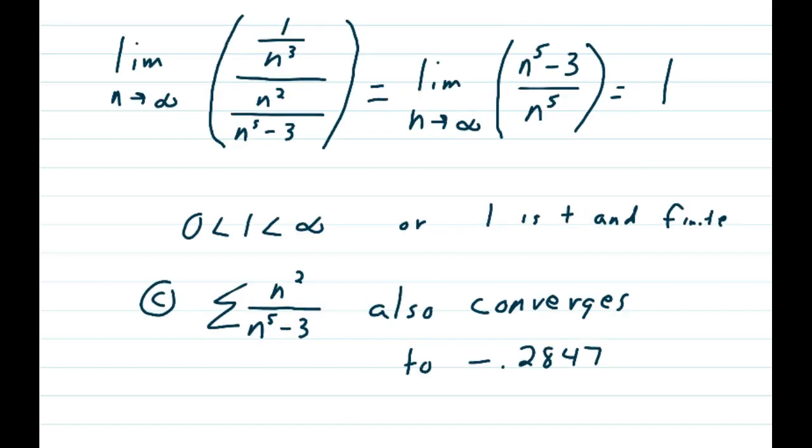Now we take the limit as n approaches infinity of the known p-series 1 over n cubed over the unknown series n squared over n to the fifth minus 3. Flip-flop the fractions, we have the limit as n approaches infinity of n to the fifth minus 3 over n to the fifth, which is equal to 1.